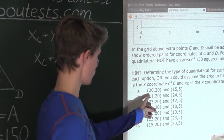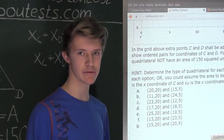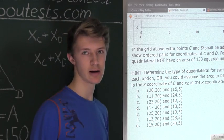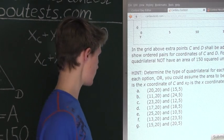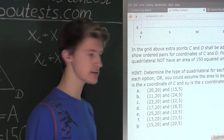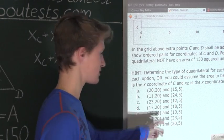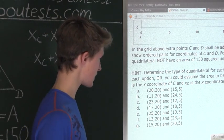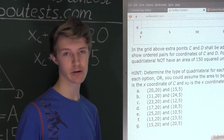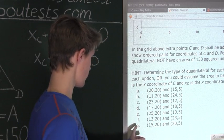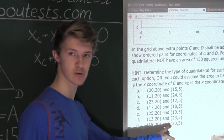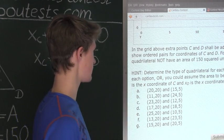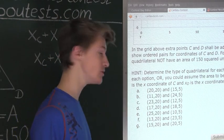Alright. So 20 plus 15 is 35, so that does have that area. 11 plus 24 is 35, so again, that has the area. 23 plus 12 is 35 again, so that works. 17 plus 18 is 35, so that works too. 25 plus 10, that's 35 again, so that works too. Now we have, for option F, 13 plus 23, that's 36, so not 35. So therefore, option F does not have an area of 150 squared units.